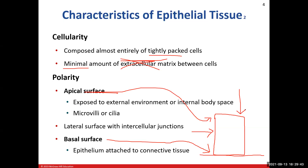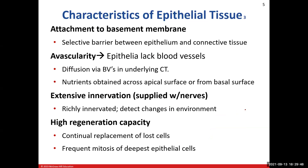Depending on where this epithelium is located determines the apical surface — whether it's exposed to the external environment like our skin, or an internal environment like the lining of the small intestine. All epithelial tissue sits on a basement membrane, which is a selective barrier, similar to the plasma membrane — it lets certain things pass and blocks others. Think of the basement membrane as a thin layer between epithelial tissue and the connective tissue deep to it.